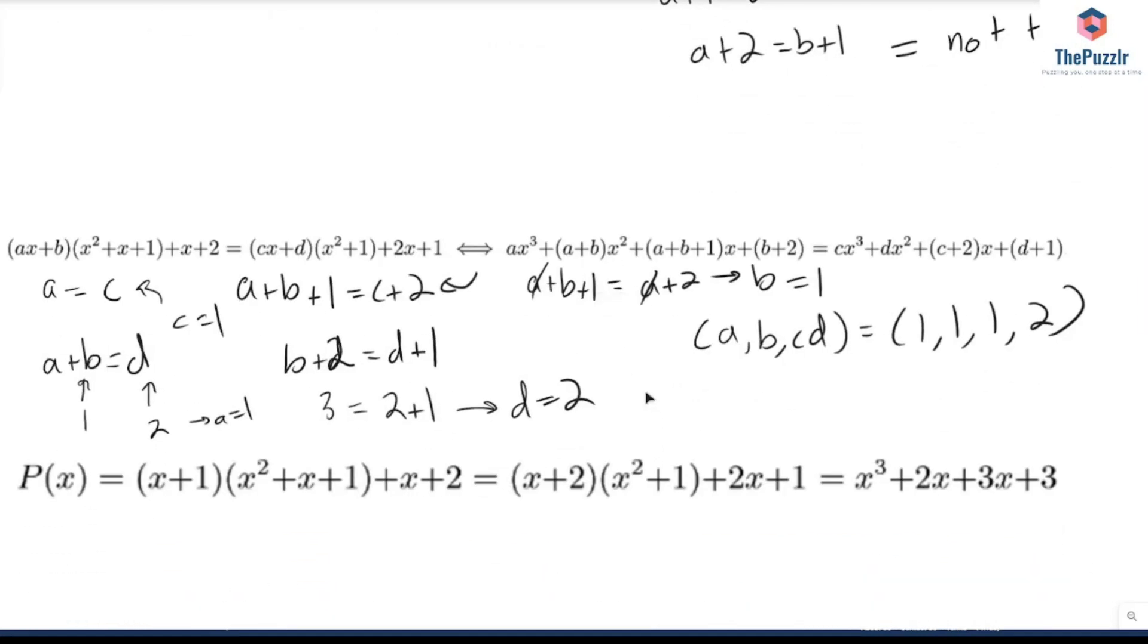Okay, so once we have that, we can just plug it back in. We can plug back in the values that we have for a and for b and use that to solve. So this, plugging it back into this, would give us this cubic right here. x³ + 2x² + 3x + 3.